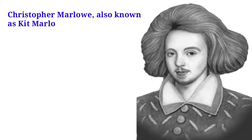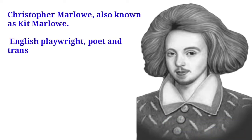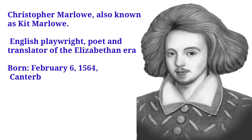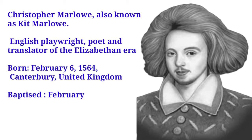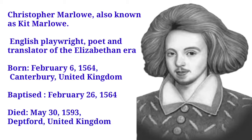Christopher Marlowe, also known as Kit Marlowe, was an English playwright, poet and translator of the Elizabethan era. He was born on February 6, 1564, in Canterbury, United Kingdom, and he was baptized on February 26, 1564. He died on May 30, 1593 at Deptford, United Kingdom.